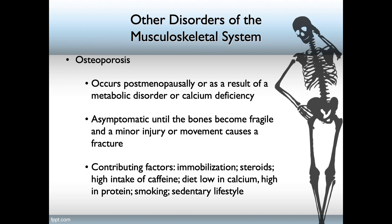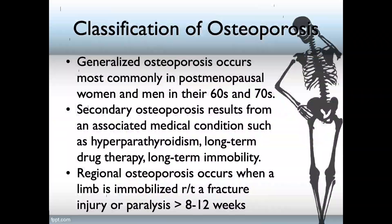Contributing factors include immobilization, steroids, a high intake of caffeine, a diet that is low in calcium and high in protein, smoking, and a sedentary lifestyle. You should know that generalized osteoporosis occurs most commonly in postmenopausal women in their 60s and 70s, although the incidence is higher between 50 and 60. It occurs in both men and women at a higher rate between 60 and 70.